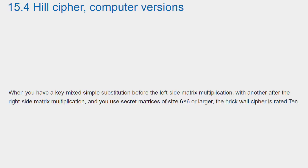When you have a key-mixed simple substitution before the left-side matrix multiplication, with another after the right-side matrix multiplication, and you use secret matrices of size 6x6 or larger, the brick wall cipher is rated 10.